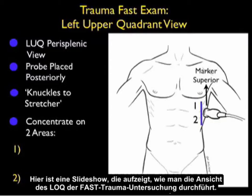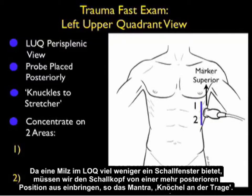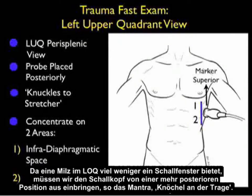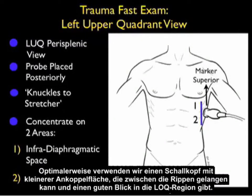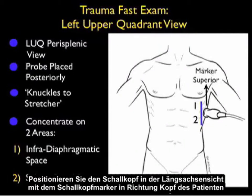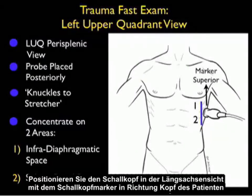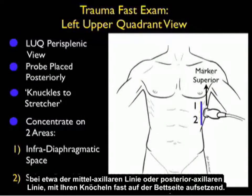Here's a slide reviewing how to perform the left upper quadrant view of the trauma FAST exam. As the spleen offers less of an acoustic window, we need to bring the probe in from a more posterior position — thus the mantra: knuckles to stretcher. Optimally we're using a smaller footprint probe that can get in between the ribs. Position the probe in the long axis view with the probe marker towards the patient's head, at about the mid-axillary line or posterior axillary line with your knuckles almost touching down to the bedside.